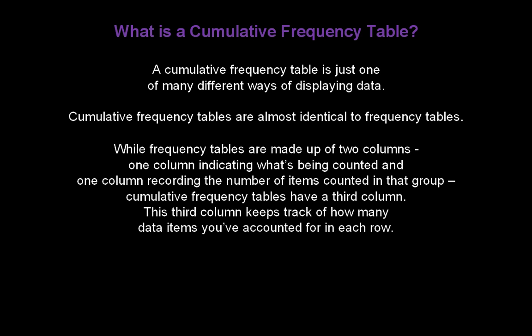While frequency tables are made up of two columns—one column indicating what's being counted, and a second column recording the number of items counted in that group—cumulative frequency tables have a third column. And it's this third column that keeps track of how many data items you've accounted for in each row.